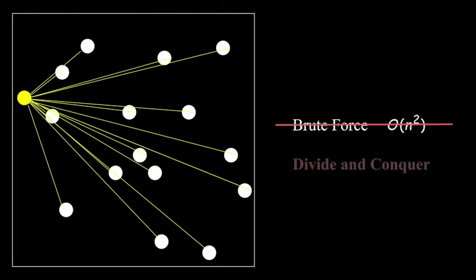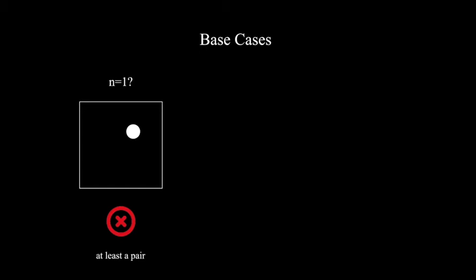So we introduce another algorithm using the divide and conquer technique. Let us start by looking at the base cases. Could we have just one point in our set? Since we're looking for a pair, let's say we should at least have a pair. If we have two points in the set, we can just say this is the closest pair, because this is the only pair.